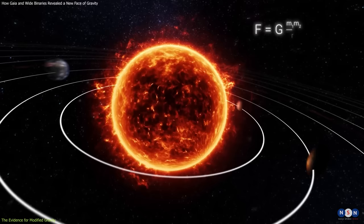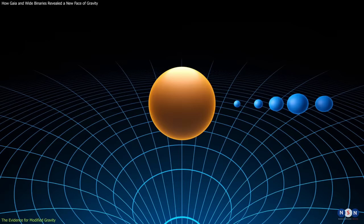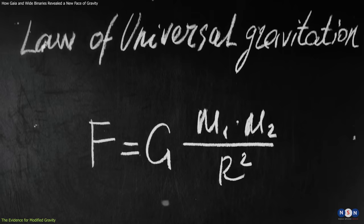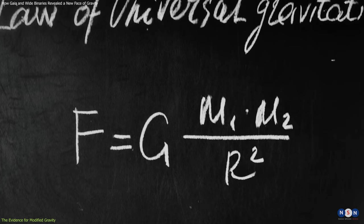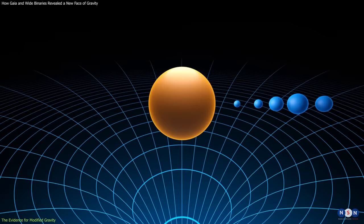they start to deviate from the predictions of Newton's universal law of gravitation and Einstein's general relativity, which are two of the most widely accepted theories of gravity in physics. Newton's law states that the gravitational force between two objects is proportional to their masses and inversely proportional to the square of their distance.